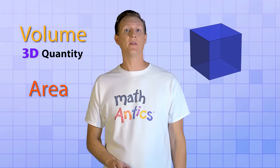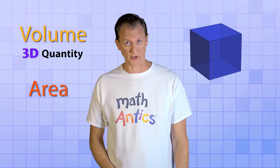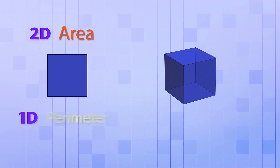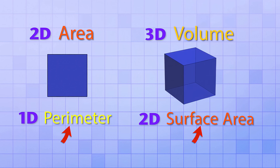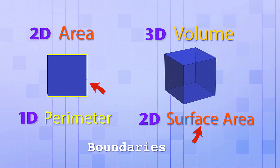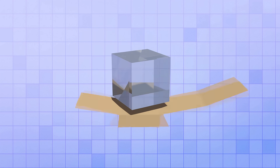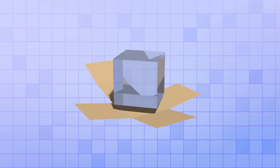Volume is a 3D quantity for measuring 3D objects. But 3D objects also have a type of area you don't want to confuse with volume. Just as 2D shapes have both a 2D quantity called area and a 1D quantity called perimeter, 3D objects have both a 3D quantity called volume and a 2D quantity called surface area. Surface area is the area of the object's outer surface or shell. To see the difference, imagine a perfectly thin box filled with ice: if you unfold the box, you can see the 2D area surrounding the volume, while the volume is the amount of 3D space occupied by the ice inside.